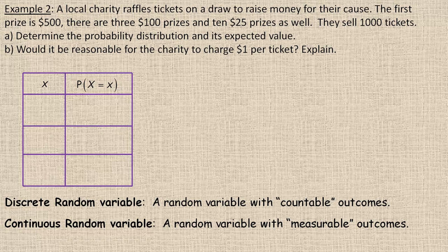One more page here. An example, a local charity raffles tickets on a draw to raise money for their cause. The first prize is $500. There are three $100 prizes and then 10 $25 prizes. They sell 1000 tickets. So part A says determine the probability distribution. There are three different prizes, $500, $100, or $25. So in the table, we would put those under X because that's what X could be. You could win $500, $100, or $25.